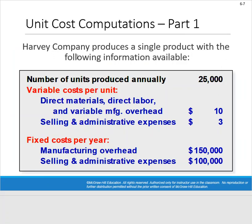Here we're looking at Harvey Company. They produce a single product with 25,000 units produced annually. Variable costs — direct materials, direct labor, and variable manufacturing overhead — add up to $10 per unit, and variable selling and admin expenses are $3 per unit. Fixed costs include manufacturing overhead of $150,000 and selling and admin expenses of $100,000. They've organized this by cost behavior — variable versus fixed — but we've also mixed product costs and period costs together.